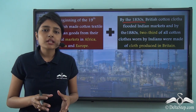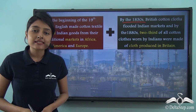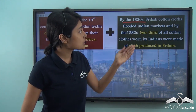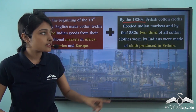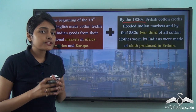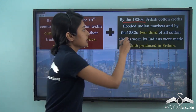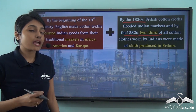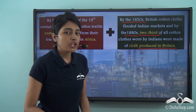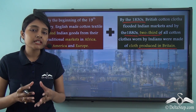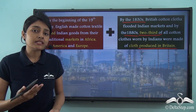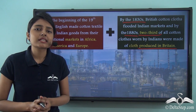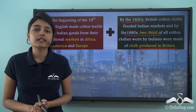At this point of time, it was no longer Indian cotton textiles that were being sold in the Indian markets. Instead, it was the British cotton textiles that flooded Indian markets. And you will be surprised to know that by the 1880s, two thirds of all cotton cloths worn by the Indians were actually produced in Britain. The indigenous products were no longer in great demand in the Indian markets. This dealt a severe blow to the Indian cotton textile producers.